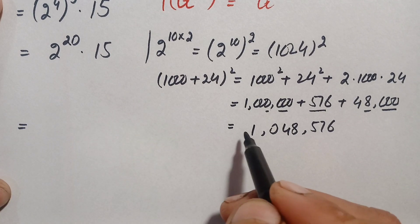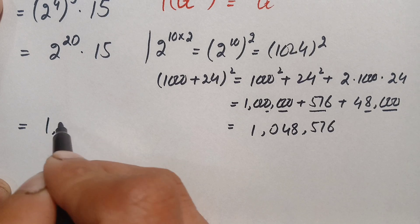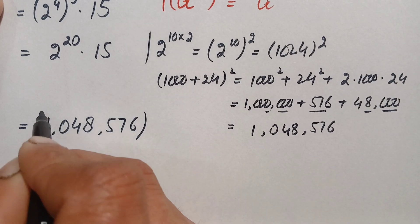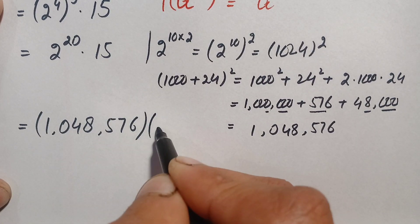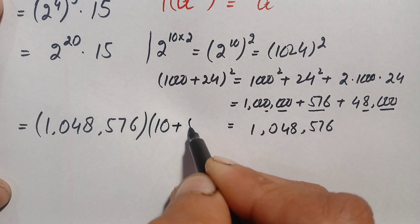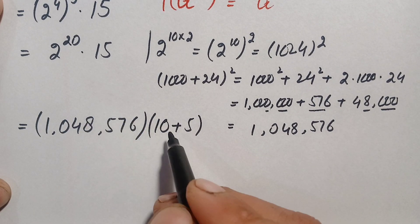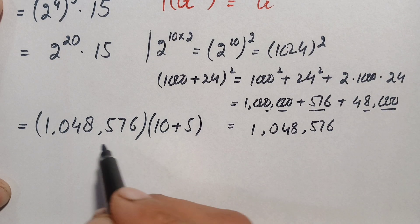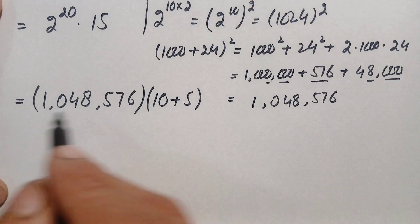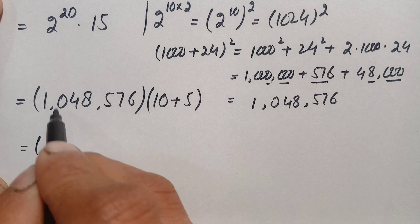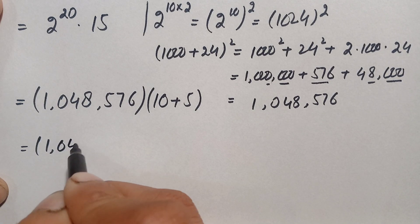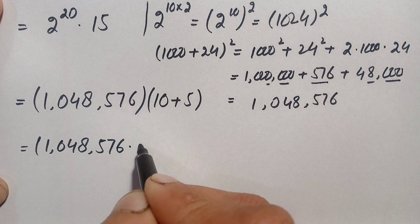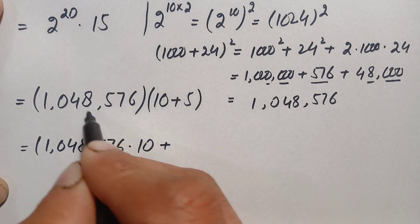We now need to multiply 1,048,576 by 15. We write 15 as (10 + 5) because multiplying by 10 and by 5 separately is much easier than multiplying by 15 directly. So we compute 1,048,576 times 10 plus 1,048,576 times 5.